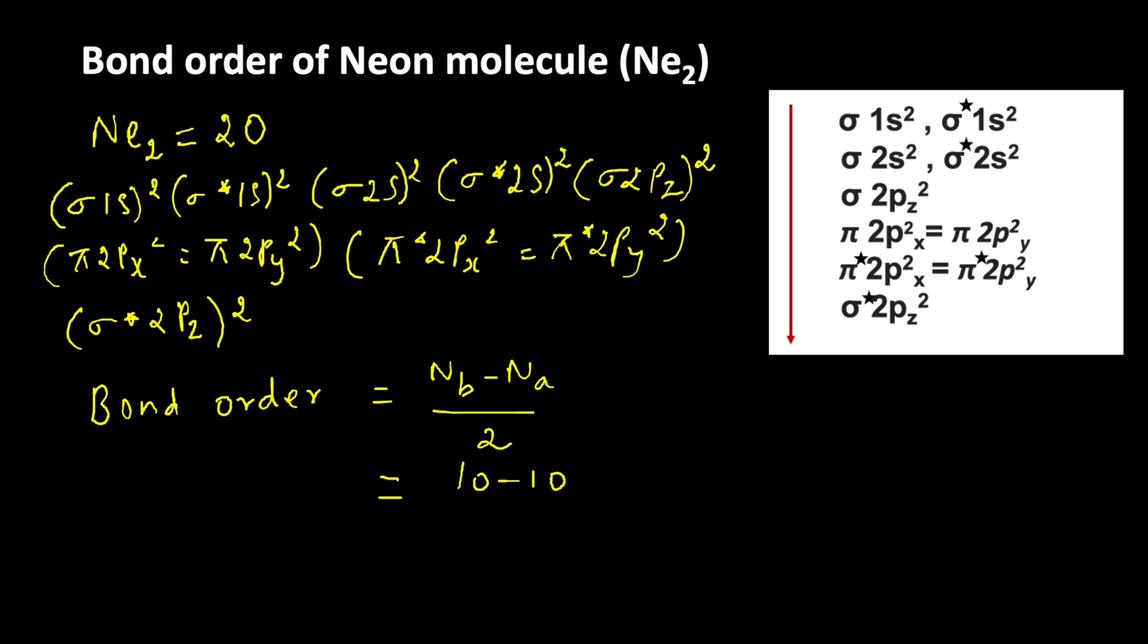10 minus 10 by 2, 0 by 2 is equal to 0. It means the bond order of neon molecule is 0. That is the reason neon molecule is unstable which does not exist.